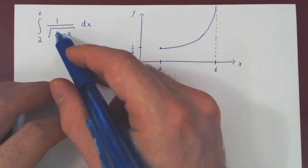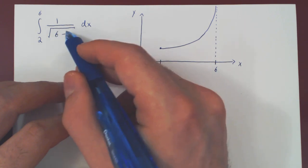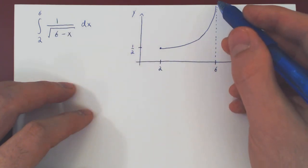and it goes up to positive infinity as x is approaching 6 from the left. As this will give us 6 minus 6 is 0, root of 0 is 0, a 1 over 0 case, positive infinity.